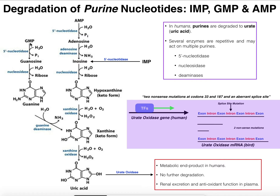GMP degradation starts off the same way. GMP is going to react with the 5'-nucleotidase, which removes the 5' phosphate from GMP, giving us guanosine. Guanosine already has a carbonyl atop the 6-membered ring, so it doesn't need to be deaminated at that position. We go straight to the nucleosidase and hydrolyze off the ribose ring, leaving the free base guanine. We do need to remove an amine group from a corner position of the 6-membered ring, catalyzed by guanine deaminase, which replaces that amine with a hydroxyl group — and that gives xanthine.